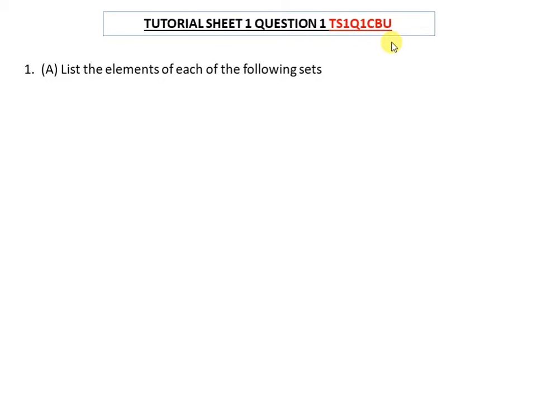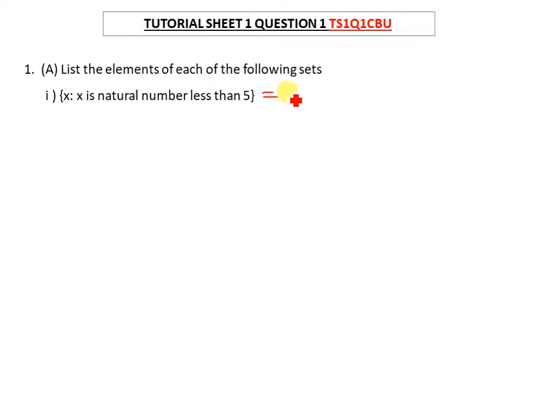Let's begin answering the question. The first question says: list the elements of each of the following sets. The first part is: x is such that x is a natural number less than five. The first thing you need to figure out is what natural numbers are. Natural numbers are counting numbers starting from one, so this set is going to be {1, 2, 3, 4} since it says less than five.